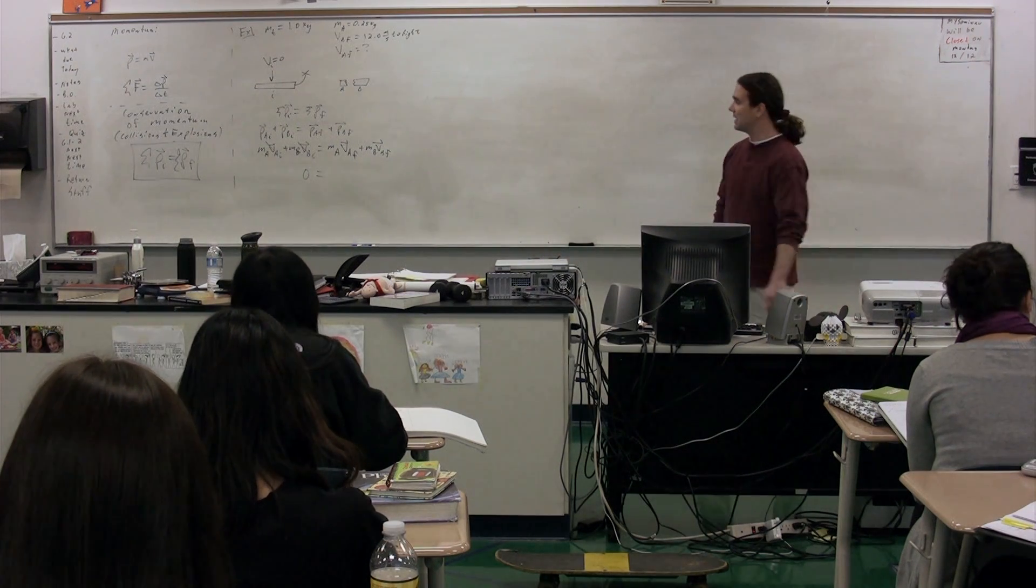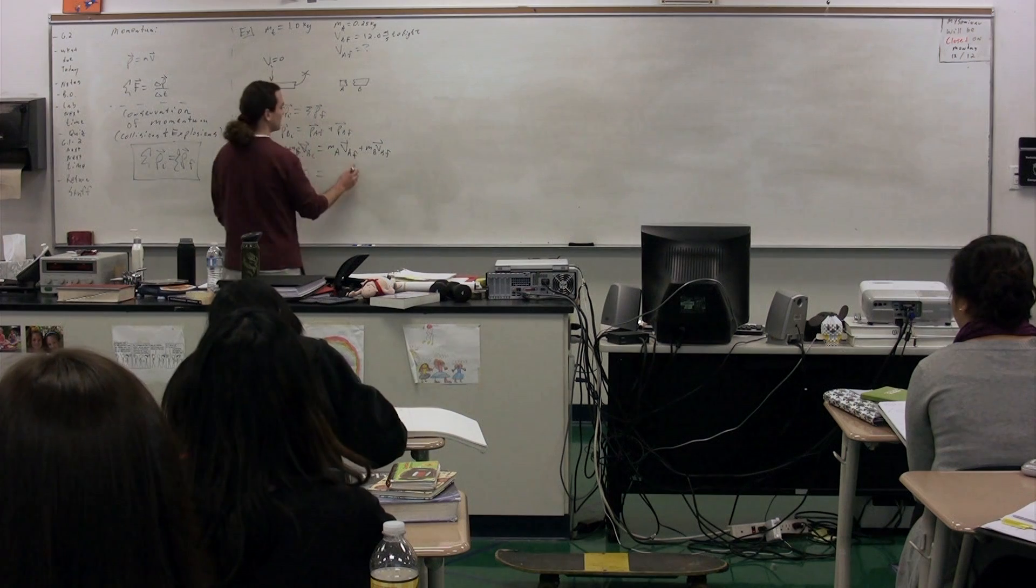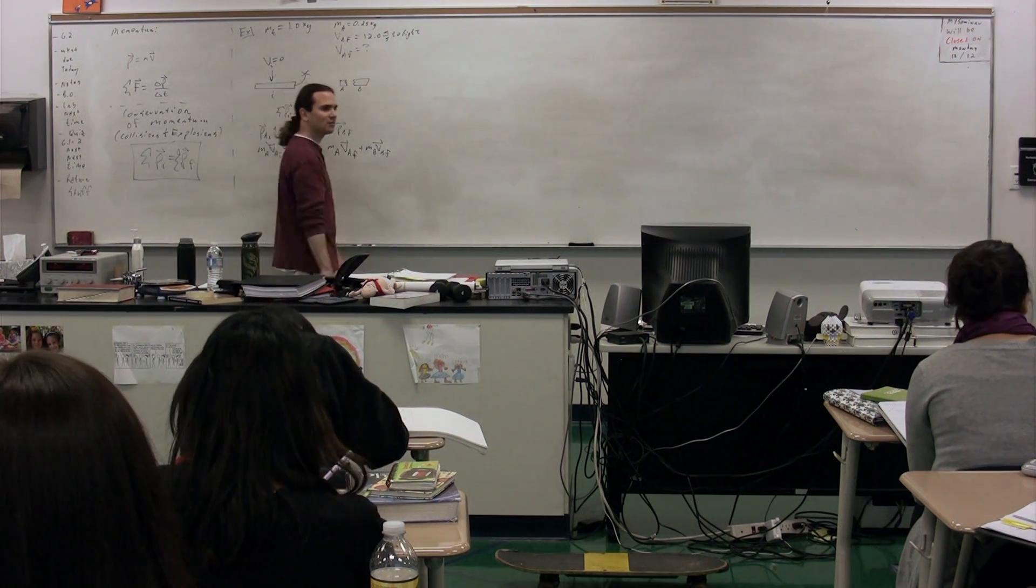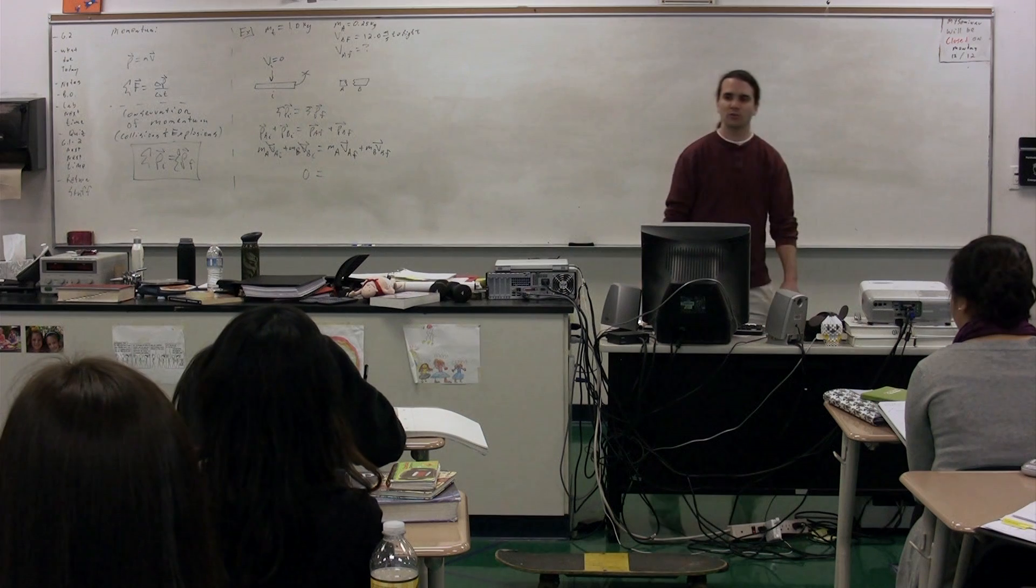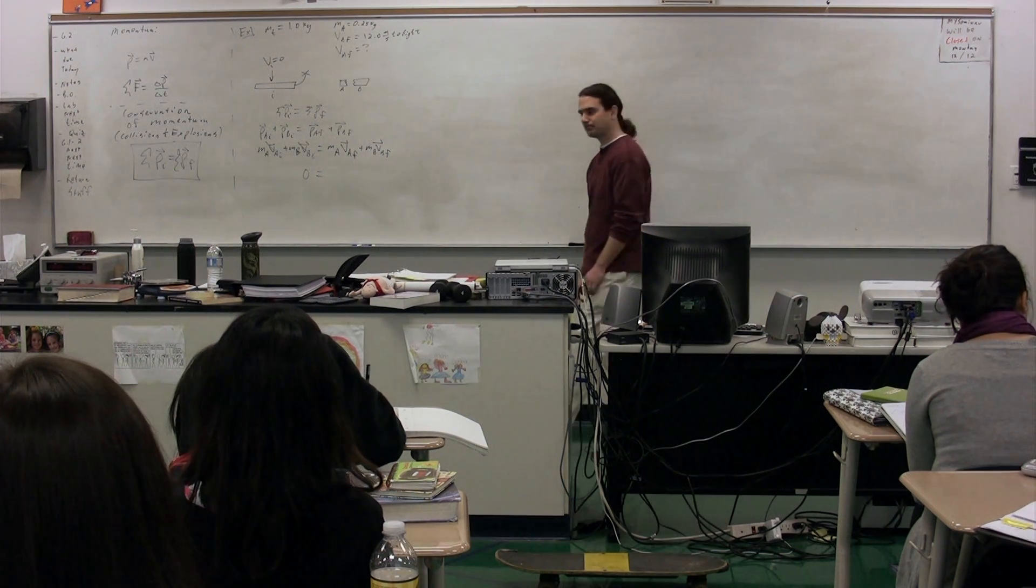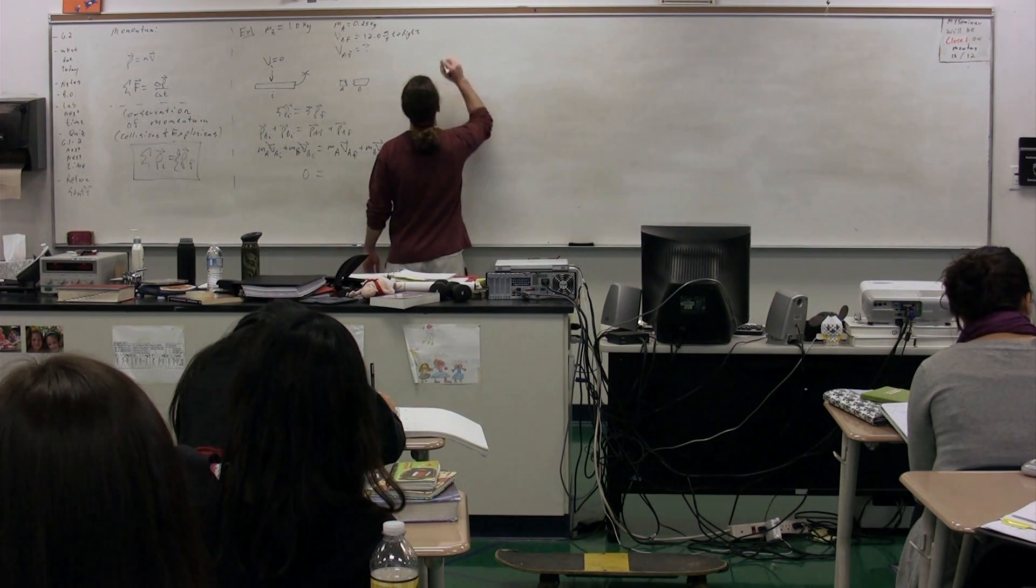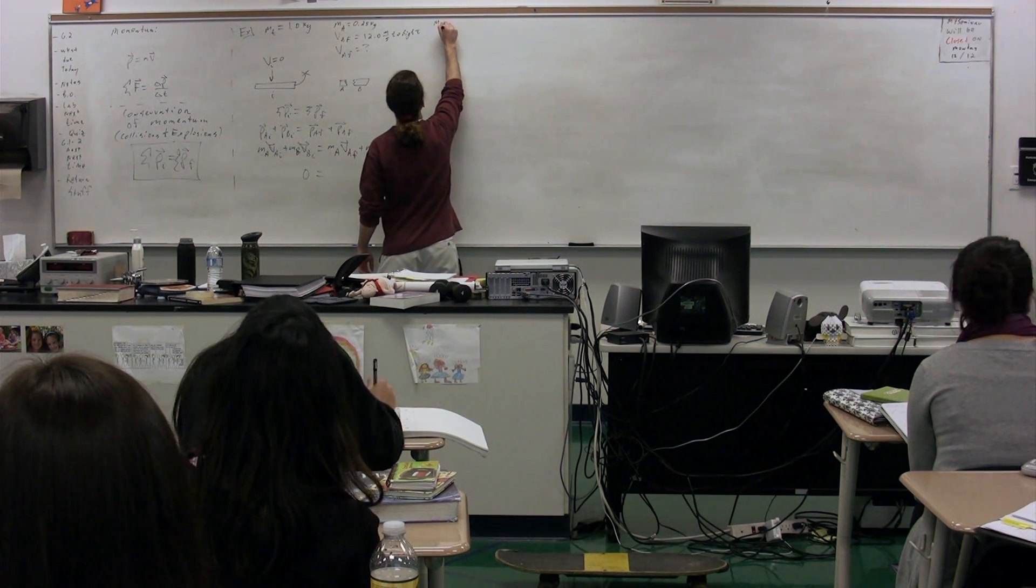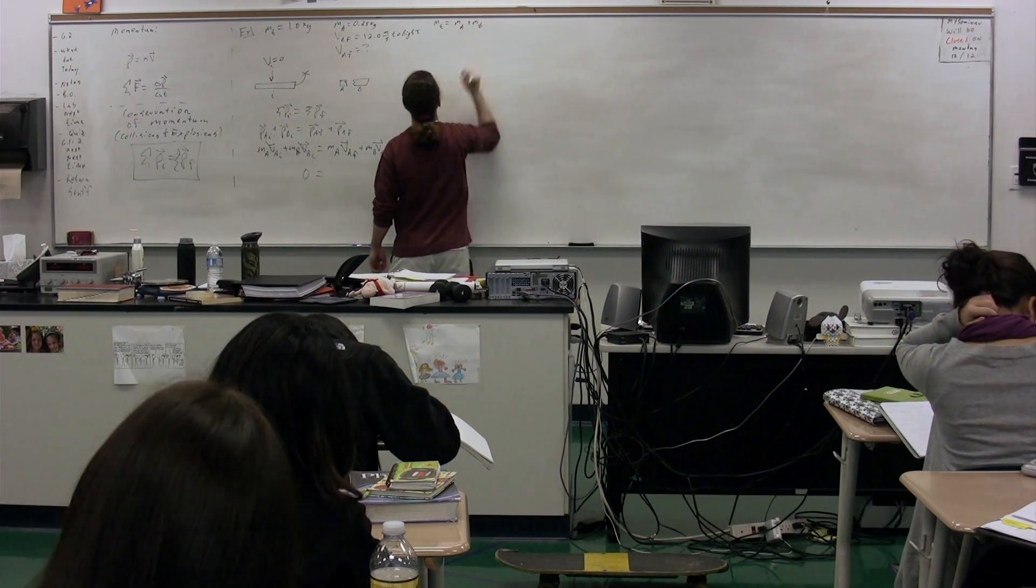On the right-hand side, we have the mass of A, which we know, and the velocity of A final, which we're trying to find. But we have the mass of B, which we do not know. What are we going to do for the mass of B? Frank? Subtract 0.25 kilograms from the total. We're going to assume that the total mass equals the mass of A plus the mass of B.